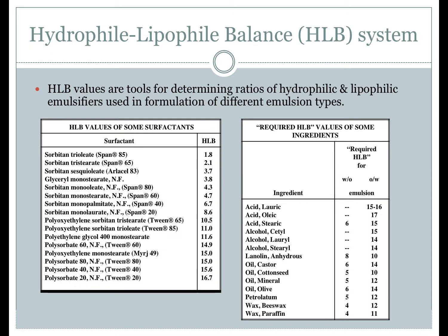Non-ionic surfactants are mixed in various proportions to produce either water-in-oil or oil-in-water emulsions — this flexibility is why they are so valuable. The appropriate amounts of individual emulsifiers needed can be determined using the hydrophile-lipophile balance (HLB) system. The HLB system assigns numeric values to fats, oils, and emulsifiers based on the relative amounts of the hydrophilic and lipophilic portions present. Numbers ranging from 1 to 20 are assigned to surfactants — lower numbers for lipophilic compounds and higher numbers for hydrophilic compounds.